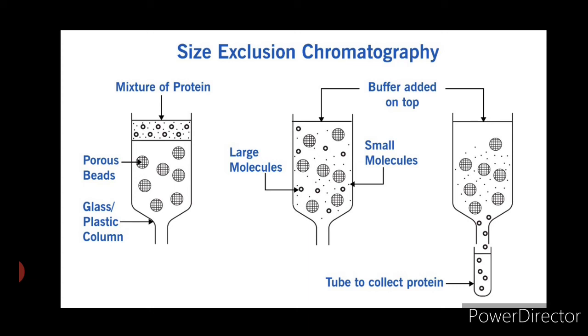Beads of differing pore sizes are available, allowing proteins of different sizes to be effectively separated. Size exclusion chromatography is often used to desalt a protein sample, for example to remove ammonium sulfate after ammonium sulfate precipitation. The salt enters the porous beads and is eluted late, whereas the protein does not enter the beads and is eluted early.